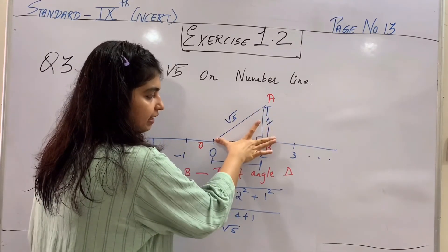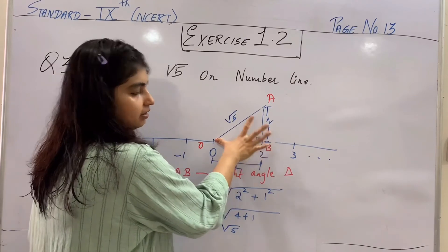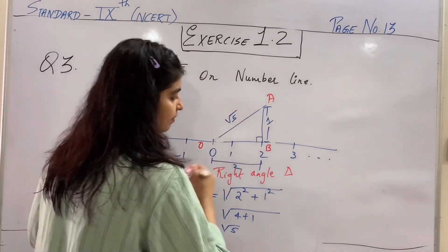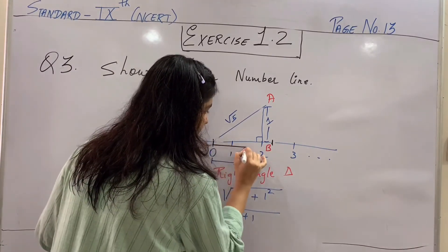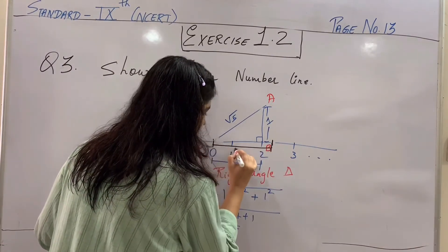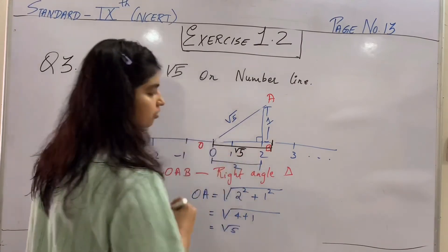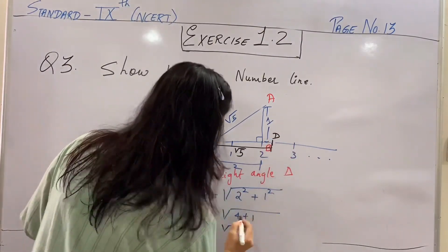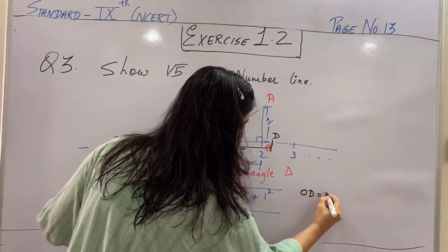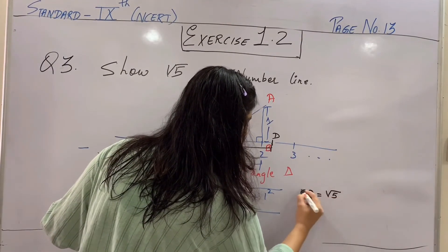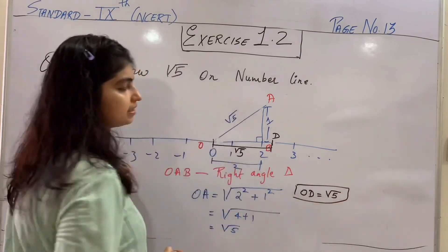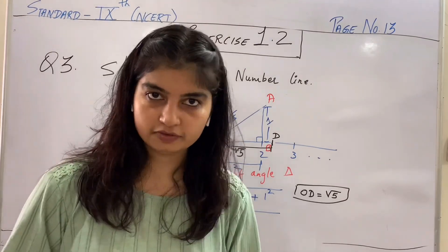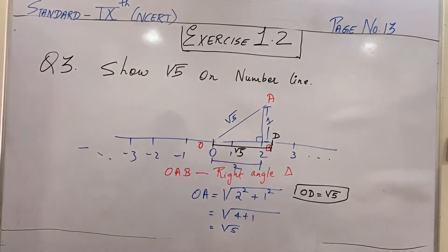But you are asked to locate it on the number line. So kya karoge? You will take a rounder. Keeping OA as center, keep the pointed part of the rounder at O. A being the center and OA as radius. Isko ko radius lena hai OA length ko jo ka root 5 hai. And cut that with a rounder end. The other end of the rounder on the number line. Jahan pe bhi woh cut kar raha hai. Now that particular length has been represented on the number line as root 5. So you can write that OD is equal to root 5. This is how you can represent the irrational numbers onto the number line.